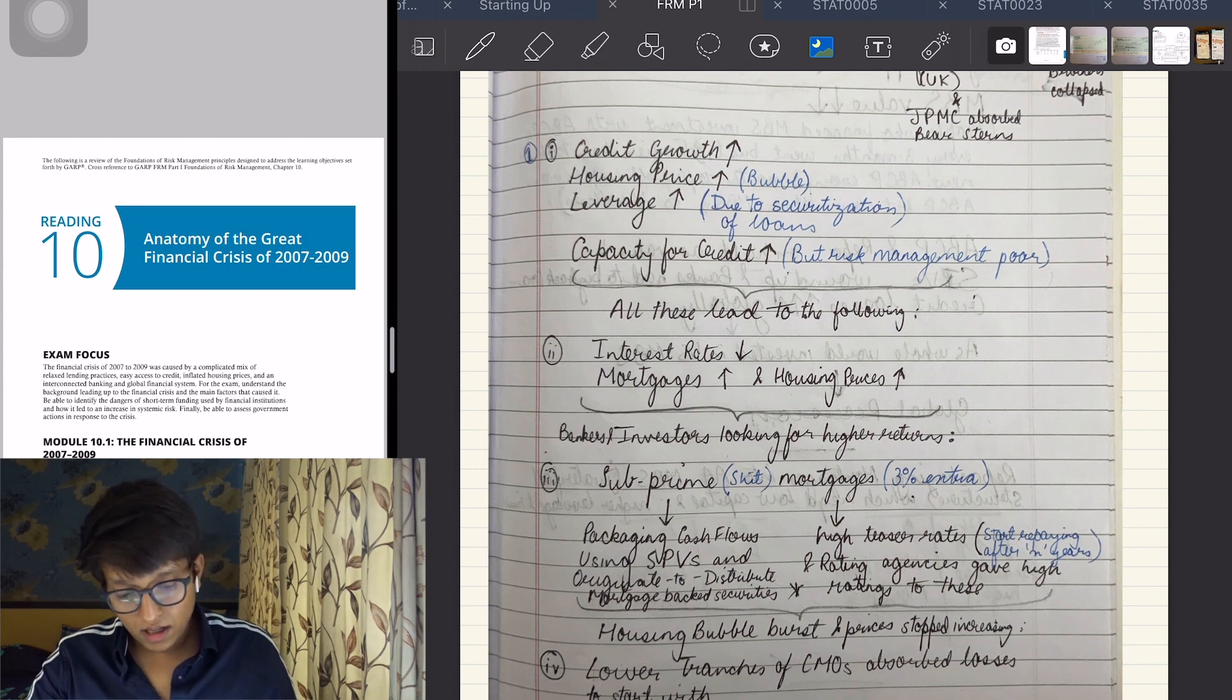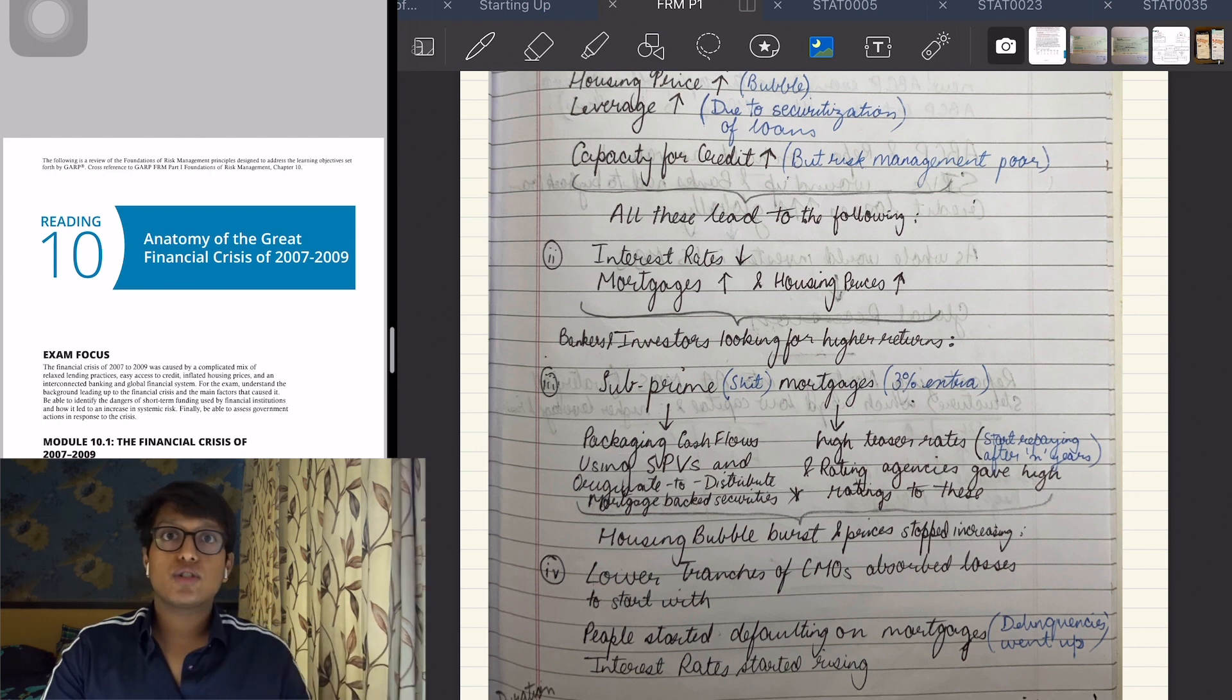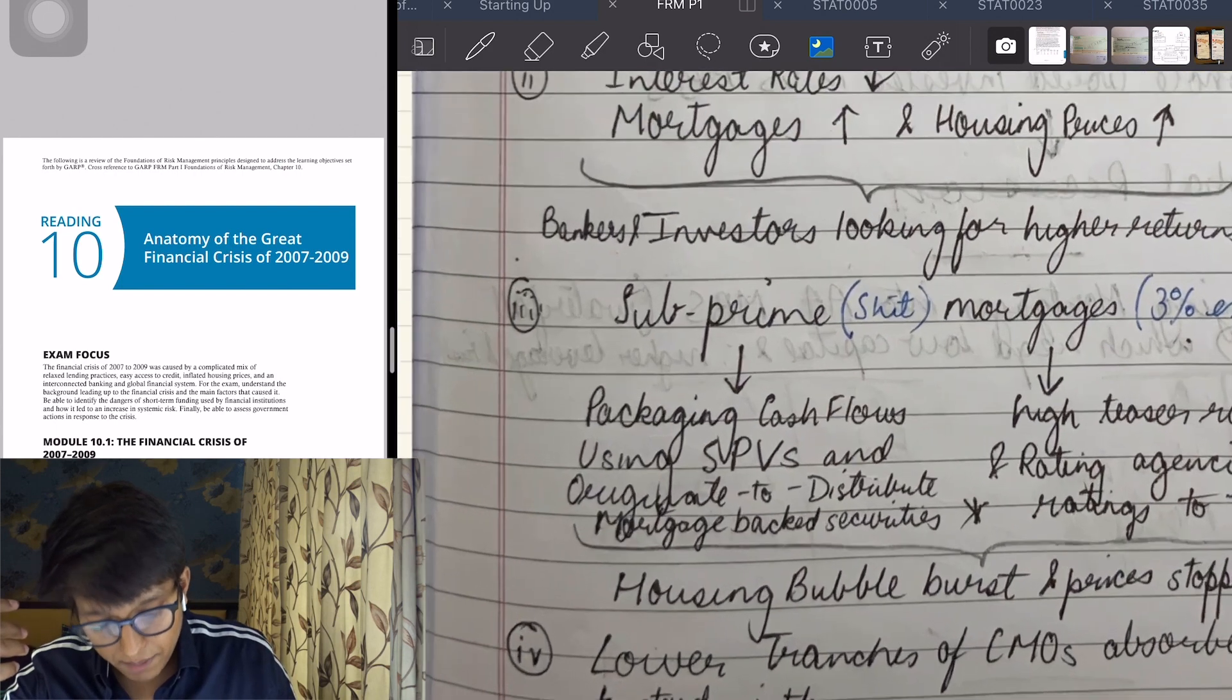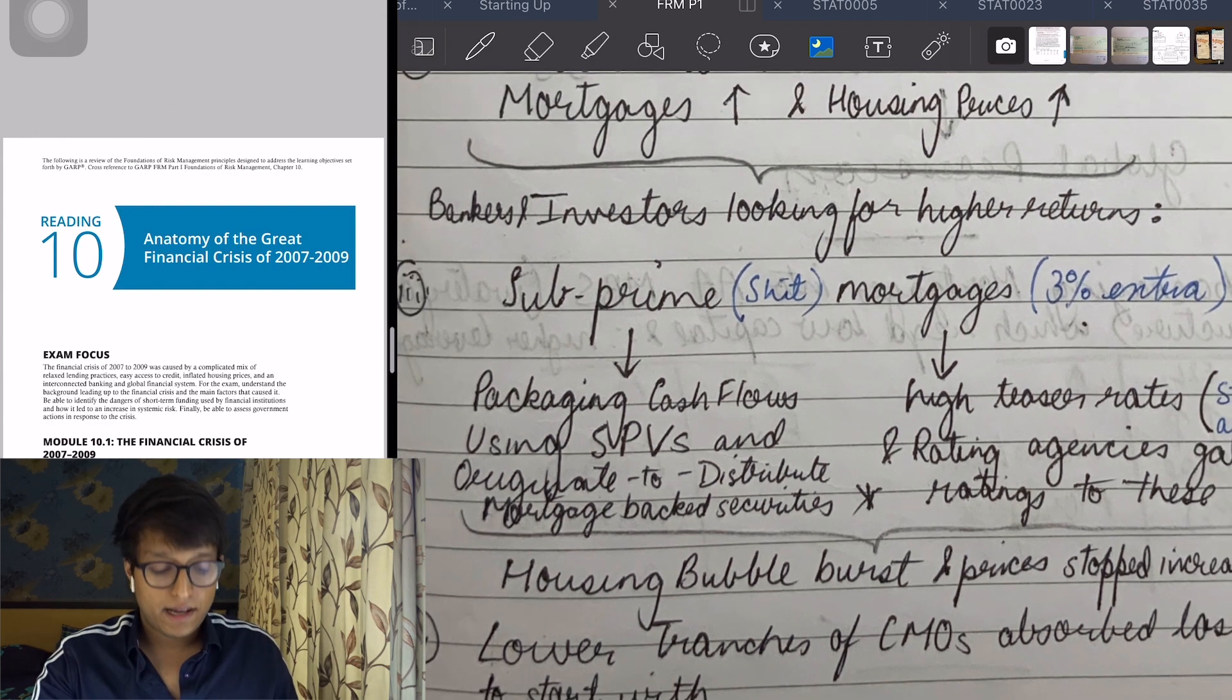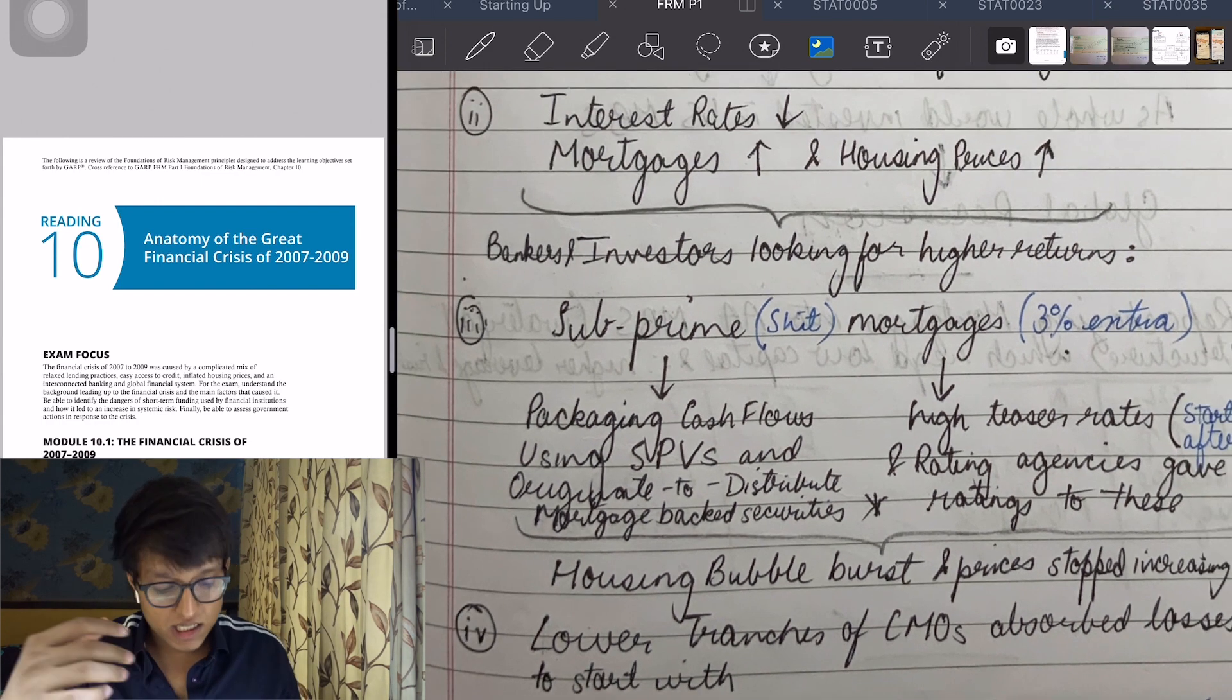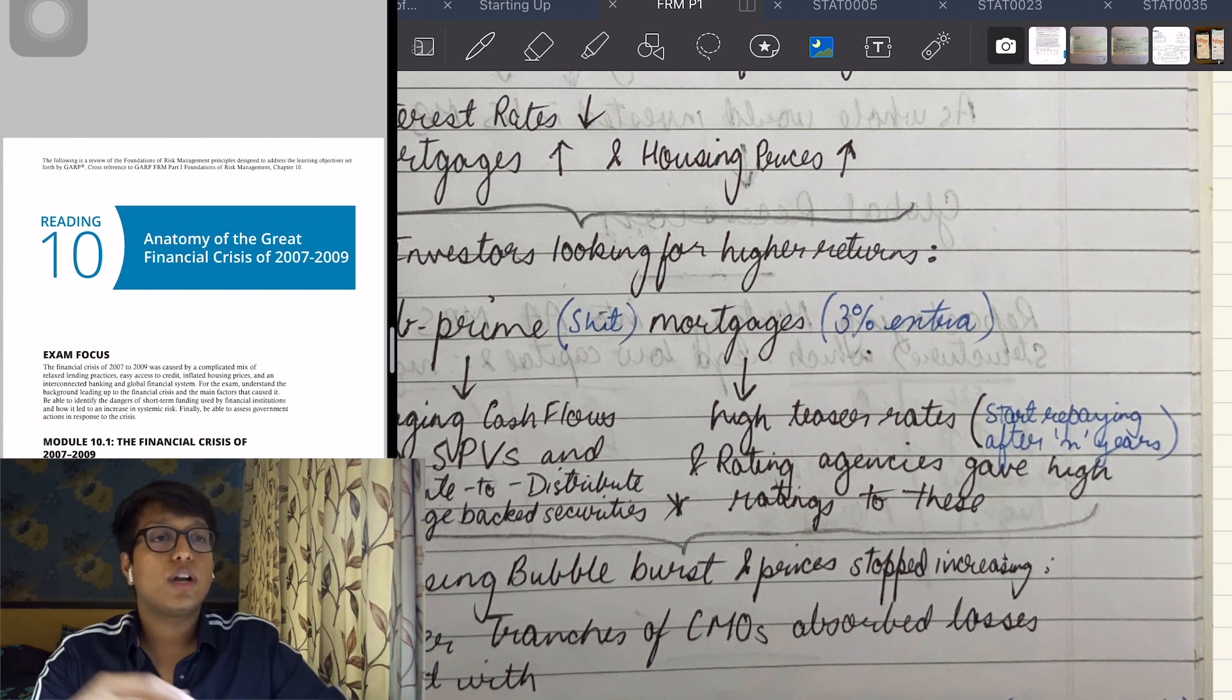Bankers and investors looking for higher returns gave out subprime mortgages and created subprime CDOs on those products. They packaged the cash flows using SPVs using the originate-to-distribute model, and they gave out mortgages at higher teaser rates. Teaser rate means you can repay this mortgage after, let's say...